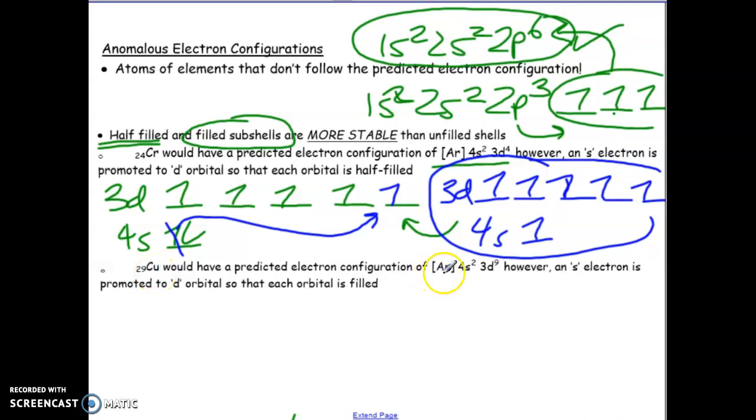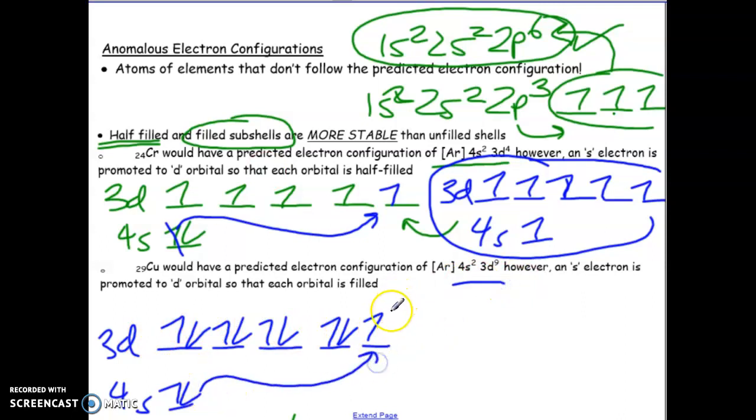Copper is another one. If we were to draw out the last two for copper - imagine, again, from 1s all the way up to here. Copper, if you look, is one away from having a full 3d set. What ends up happening is one of the 4s will get moved up to the 3d, which would then cause a half-filled 4s, which is still okay, and a full 3d set. This is called an anomaly.